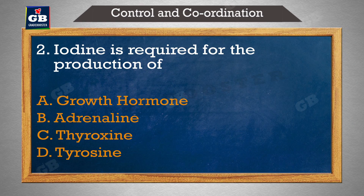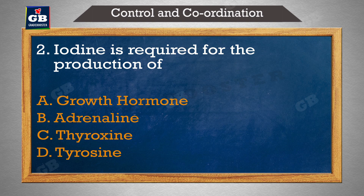Iodine is required for the production of which hormone — iodine ko dash hormone ke utpadan ke liye awashyak hai: a) growth hormone, b) adrenaline, c) thyroxin, d) tyrosine.